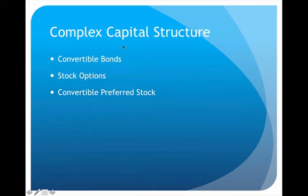What we're looking for are any convertible bonds, any stock options, or any convertible preferred stock. As long as a company has one of these three things, we would have to do these additional calculations. In this video we're going to look at each one individually and see a quick example of how to deal with each one on its own.